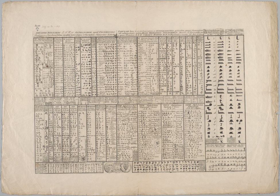The Greek alphabet, in its Euboean form, was carried over by Greek colonists to the Italian peninsula, where it gave rise to a variety of alphabets used to write the Italic languages. One of these became the Latin alphabet, which was spread across Europe as the Romans expanded their empire. Even after the fall of the Roman state, the alphabet survived in intellectual and religious works. It eventually became used for the descendant languages of Latin and then for most of the other languages of Europe.